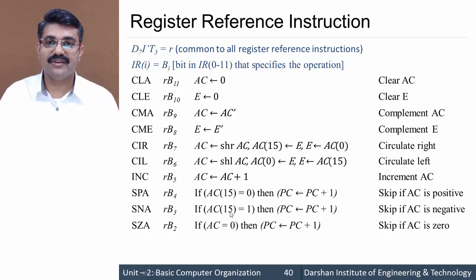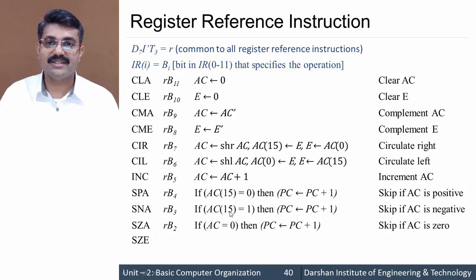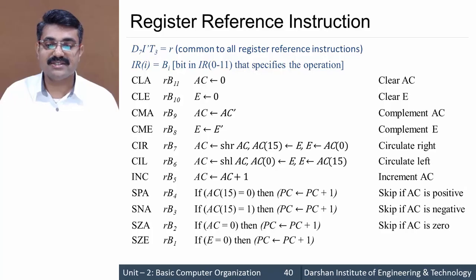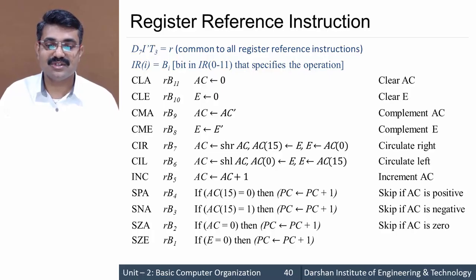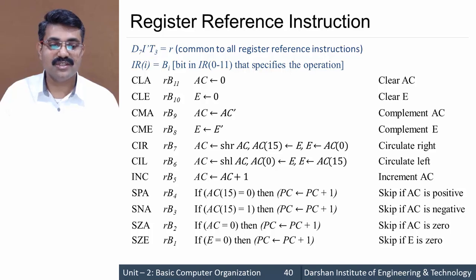The next instruction is SZE — it happens at r·b1. E is our extended accumulator bit. If E is 0 then skip the next instruction: PC equals PC plus 1. So skip if E is 0.